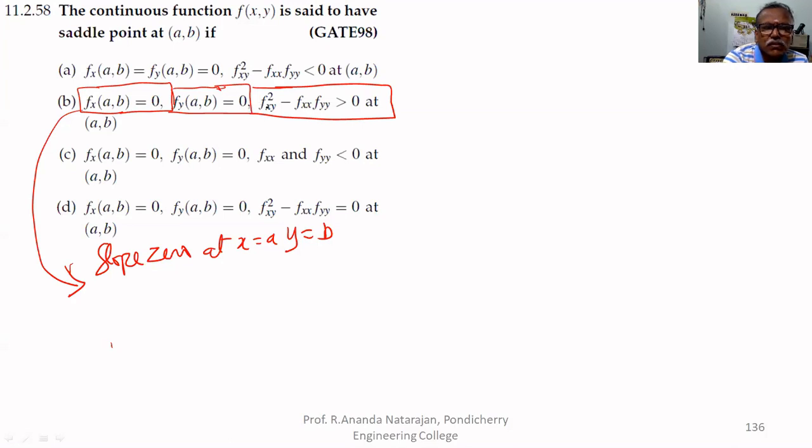That is, f_xy squared minus... we have to differentiate with respect to x and y. So f_xx - double derivative with respect to x, and f_yy - double derivative with respect to y. The difference between the product of these is greater than zero at (a,b). So that is the condition. Therefore, b is the correct answer.